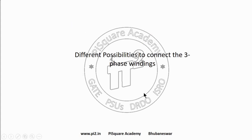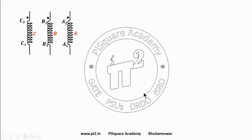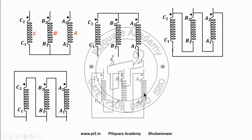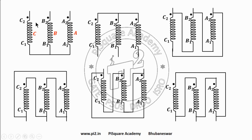Now let us see different possibilities to connect three-phase windings. We have three coils — they can be connected in star or delta. If you notice, it is not just these two; we can have even more. This is also a star and this is also a star, but these two are different. Here the connection terminals are A2, B2, C2, while here they are A1, B1, C1. And if you see the delta configurations, they are different from each other though they are all delta. So we can have 6 distinct configurations of a three-phase connection.